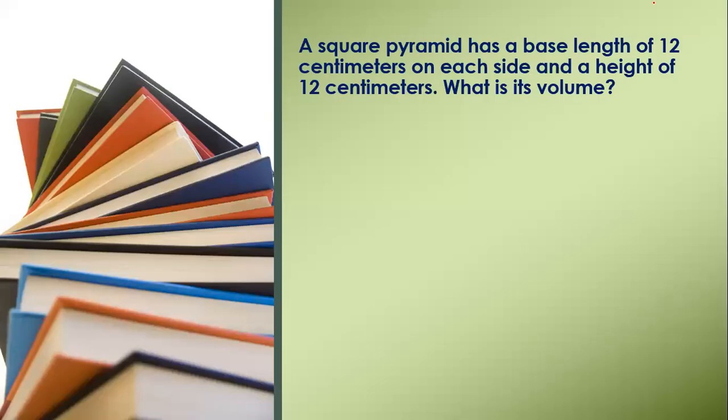A square pyramid has a base length of 12 cm on each side and a height of 12 cm. What is its volume? To find the volume of a pyramid, the formula is volume equals one-third times the base area times the height.